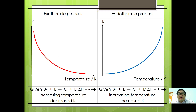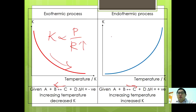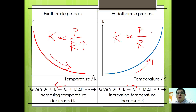In general, for an exothermic process, K is directly proportional to products and inversely proportional to reactants. When temperature increases, equilibrium shifts backward toward the endothermic direction, increasing reactants, so K decreases as temperature increases. For an endothermic forward reaction, increasing temperature causes products to increase, so K also increases.